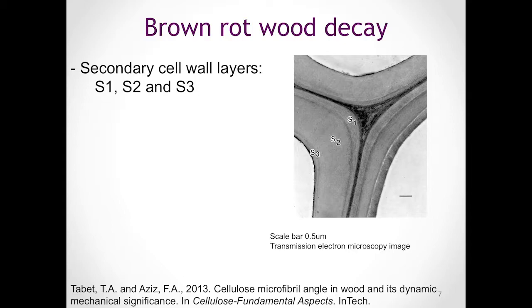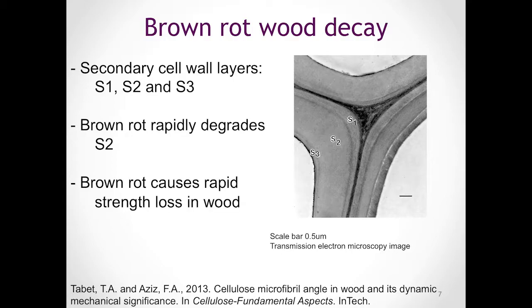Characteristically for brown rot fungi, we can say that the brown rot fungi rapidly degrade the S2 layer of the plant cell wall. Moreover, this will lead to rapid strength loss in wood.